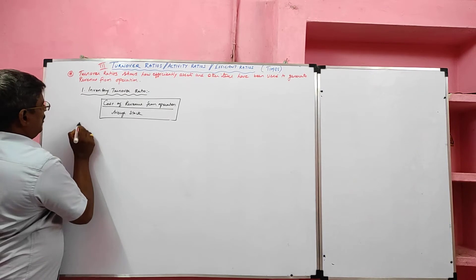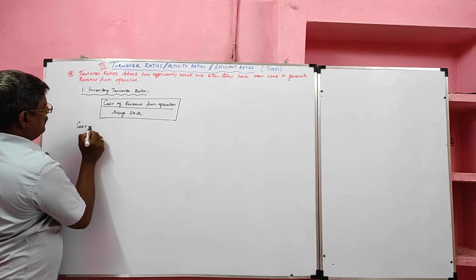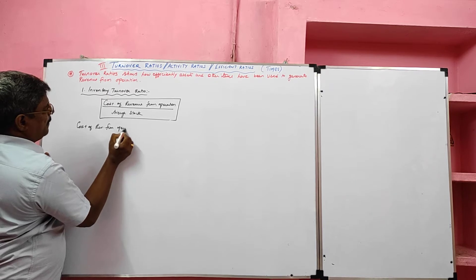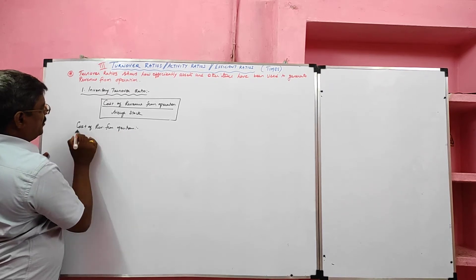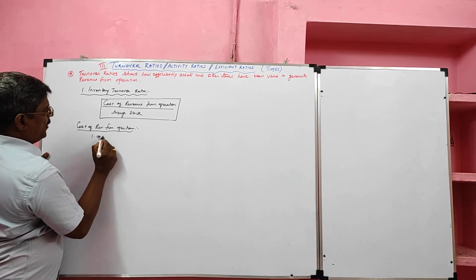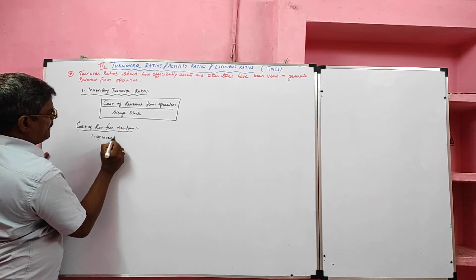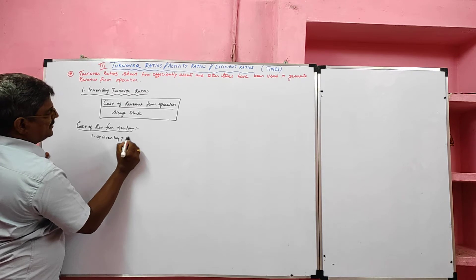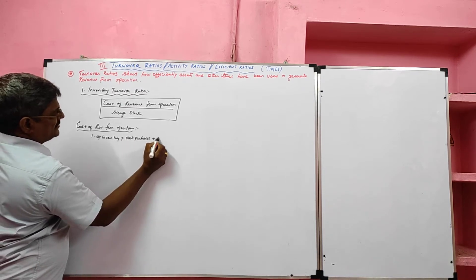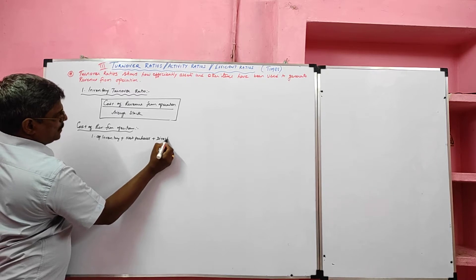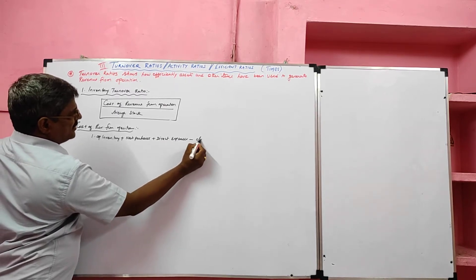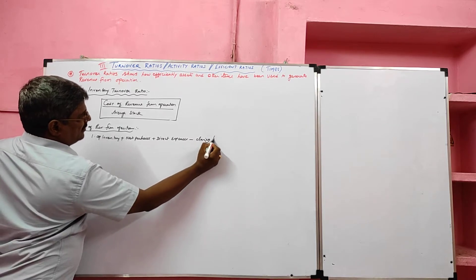Now we learn the formula of cost of revenue from operations. Formula number one: opening inventory plus net purchase plus direct expenses minus closing inventory.